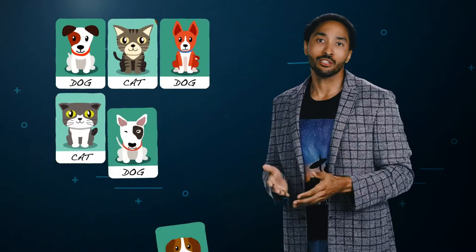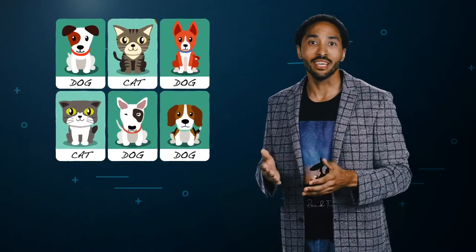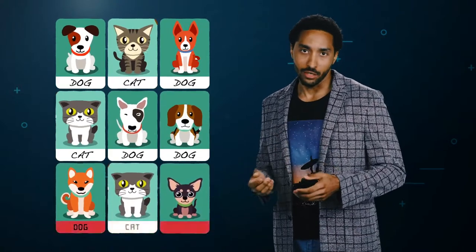If you use supervised learning method, your machine is trained with data that's already labeled by humans. As more data is added into the system, the computer learns to identify and classify. Remember that. It'll come up later. The computer learns to classify all future data.